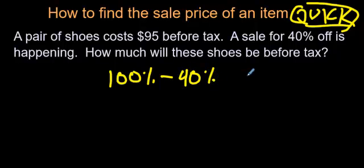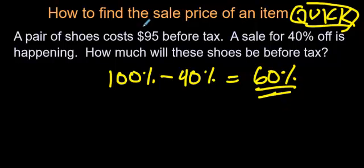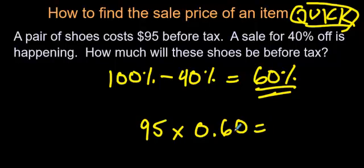In this case, it's 40%. So 100% minus 40% means you're actually only paying 60%. So when you do your multiplication, you can take $95 and multiply it by 0.6 or 0.60.